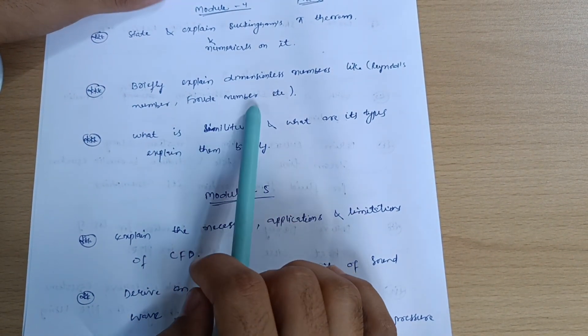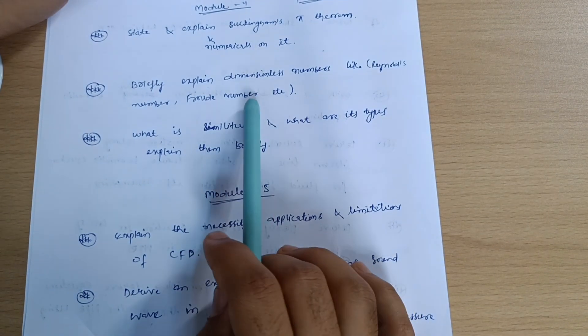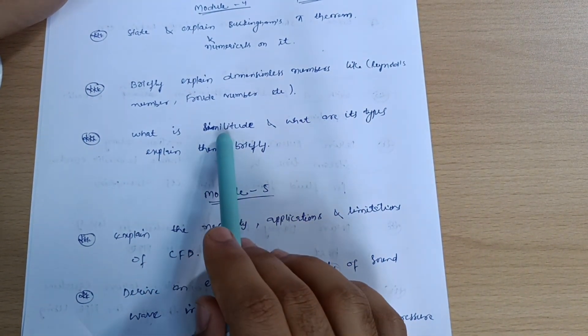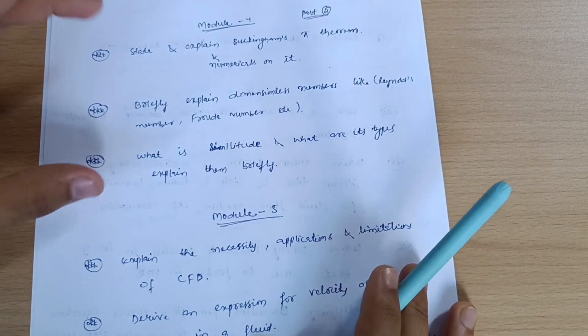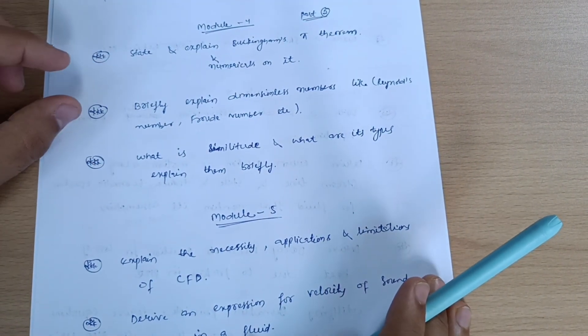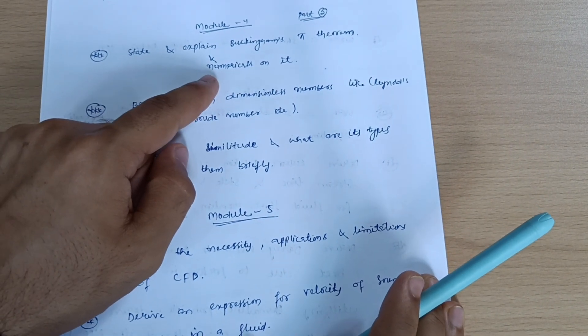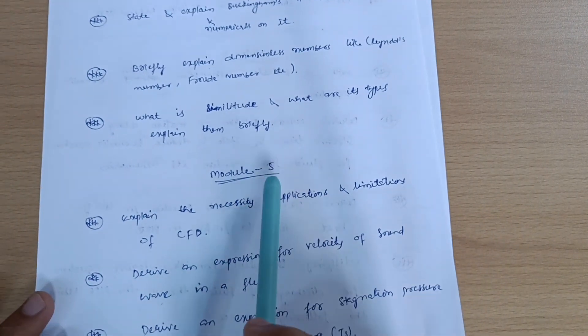Reynolds number, Froude number, Euler number, Weber number - you have to go for dimensionless numbers definition. Five numbers are here. What is similitude and what are its types, explain them briefly. These are the questions you have to cover from Module 4. If you go through the numerical part, you can easily score 20 marks from this module.